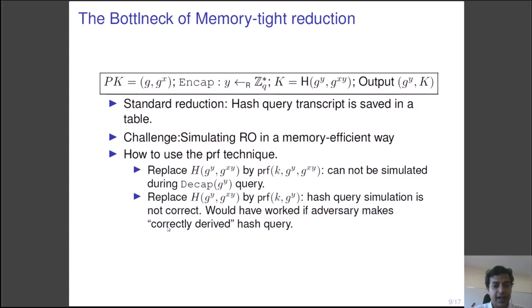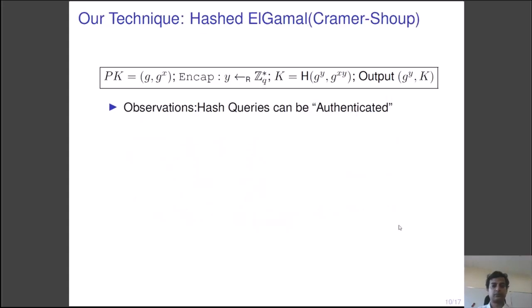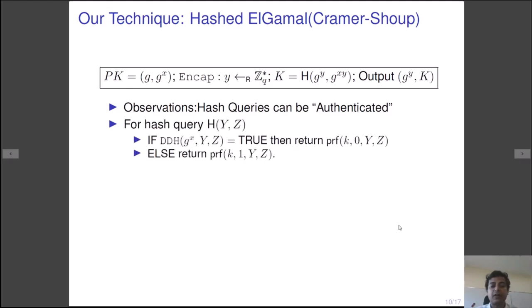However, we note that things would have worked if the adversary was restricted to making only correctly derived hash query. Namely, it could have queried with only g to the power y and g to the power xy. Unfortunately, we cannot restrict the adversary to make only such queries. So we do the next best thing. Recall that in the gap Diffie-Hellman game, the reduction is given a DDH oracle. Using that oracle, the reduction can check the well-formedness of the hash queries.